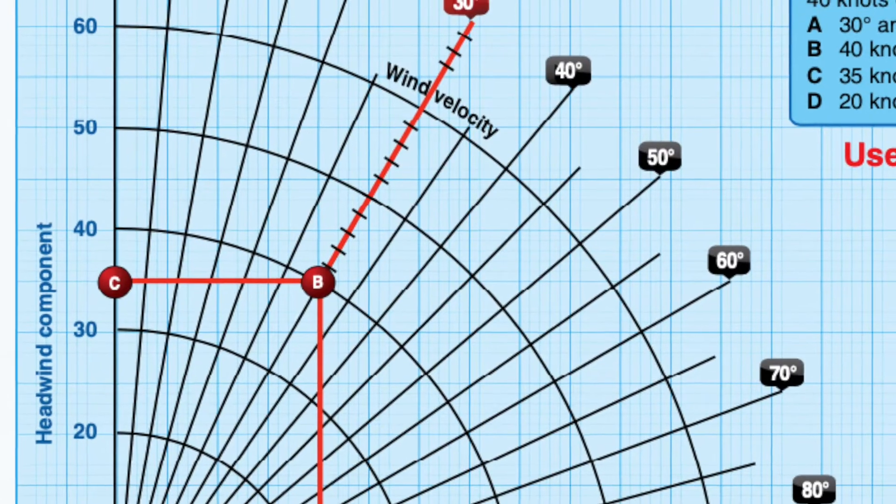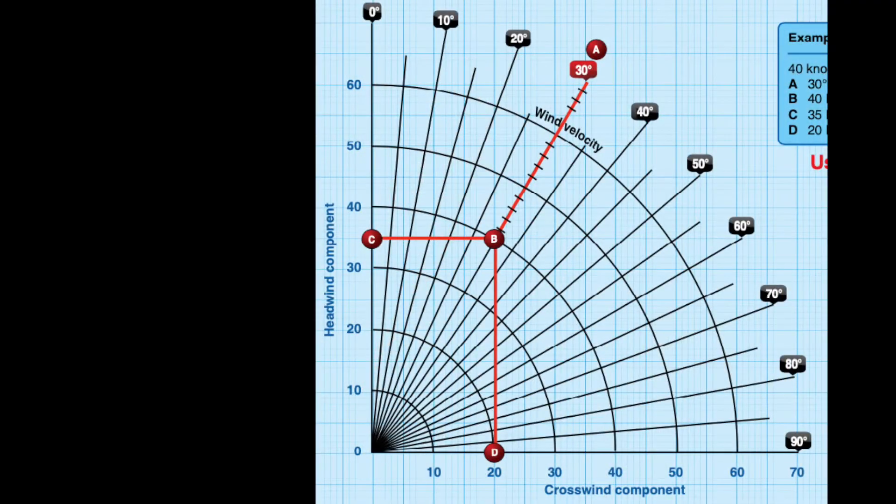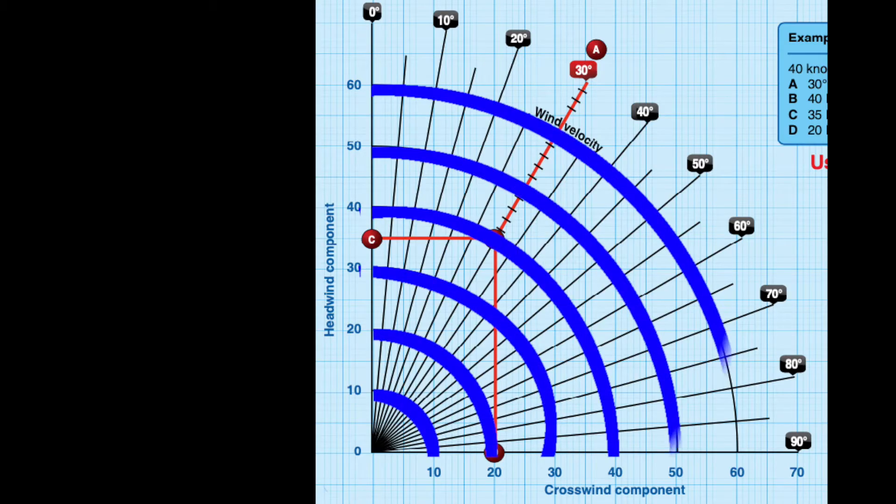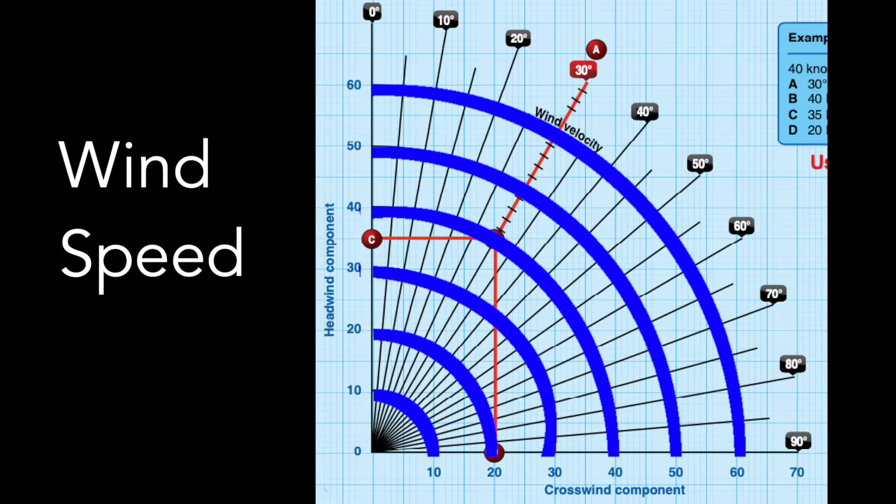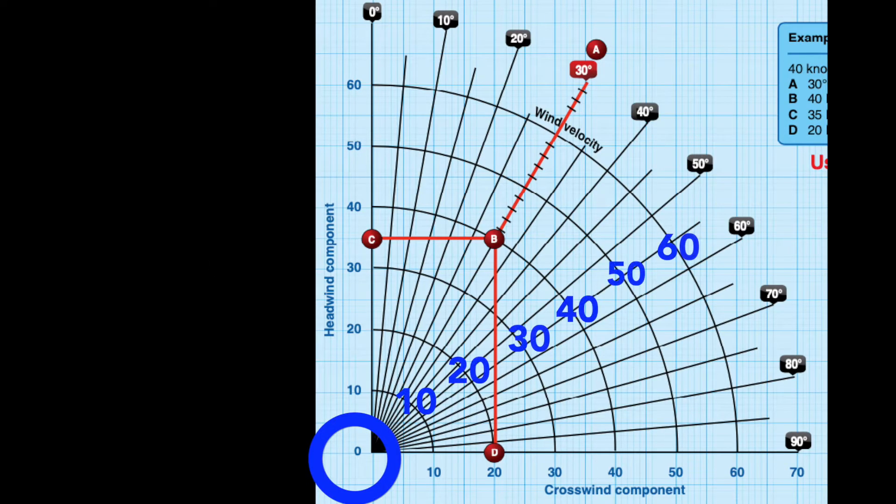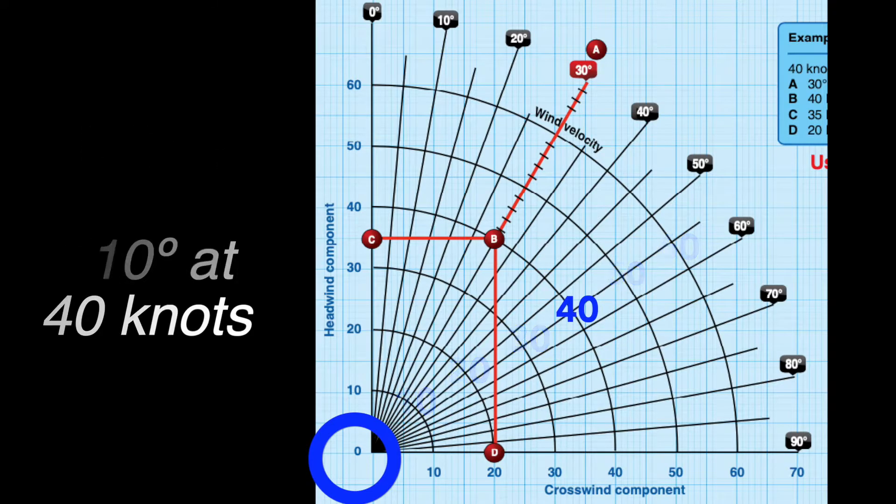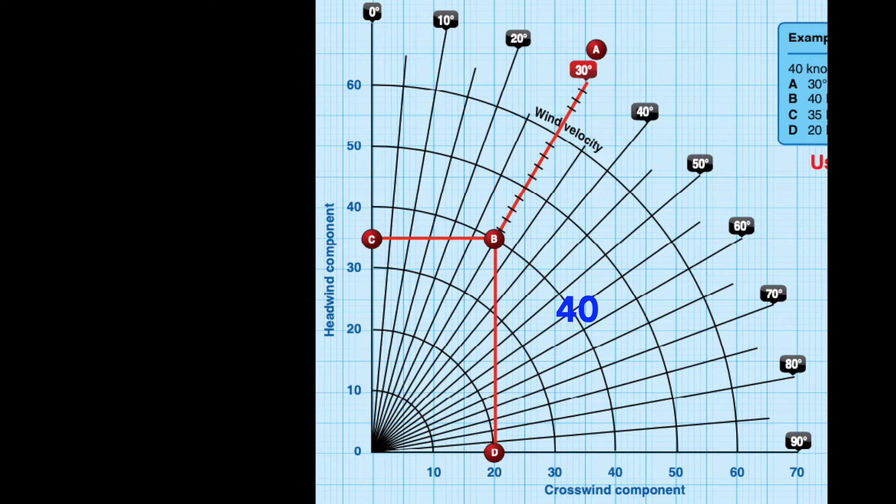Here is our 30 degree line. Next we look at these curved lines which are related to wind speed or velocity. They increase from zero up to about 60 knots. We're dealing with a 40 knot wind velocity in this example.